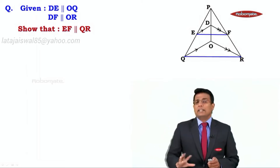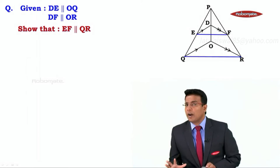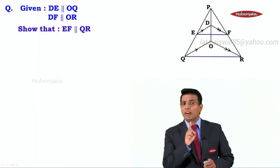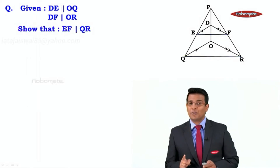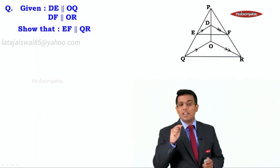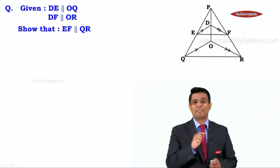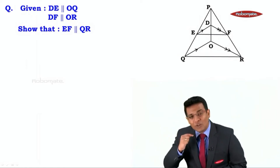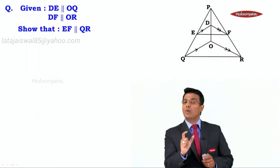Let's understand this. When do we get EF parallel to QR? EF will become parallel to QR if we get PE upon EQ equal to PF upon FR. If I get those ratios equal, then we can say that EF is parallel to QR.